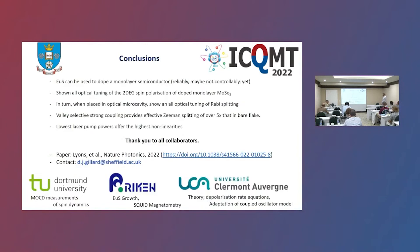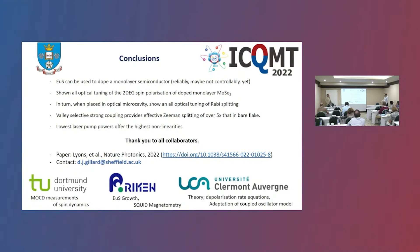So hopefully I've managed to convince you that EuS can effectively dope monolayer semiconductors reliably, and potentially controllably. We've shown an all-optical tuning of the 2D electron gas spin polarization in our doped monolayer MoSe2. When placed into an optical microcavity, we've shown all-optical tuning of our Rabi splitting. We've also shown that valley-selective strong coupling leads to a very high effective Zeeman splitting — over five times that in the bare flake — and that the lowest laser pump powers offer the highest nonlinearities. I'd like to thank all the collaborators who helped with this work.